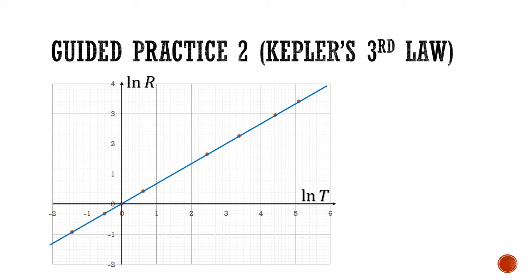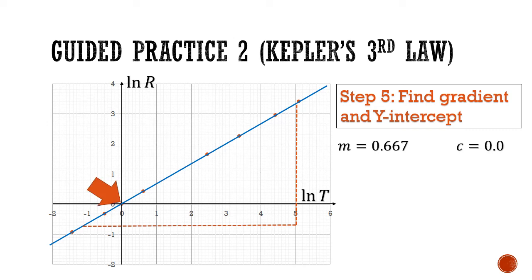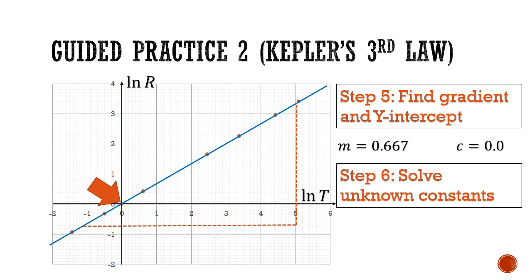In step 5, we find the gradient and big Y intercept. The gradient found by rise over run is roughly 0.667, and the big Y intercept — where the blue line crosses the ln r axis — is 0, as predicted. In step 6, we solve for the unknown constants. Since n equals m, n equals 0.667, which is roughly two-thirds. Since ln a equals the big Y intercept of 0, a equals 1.